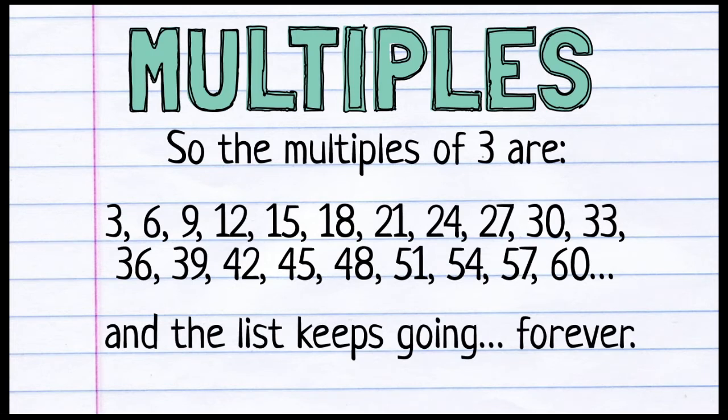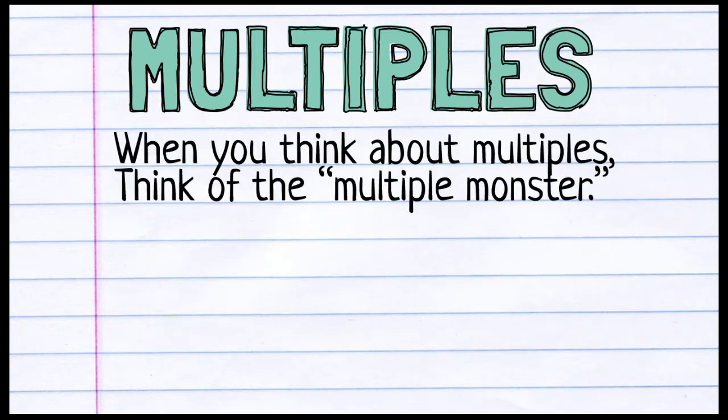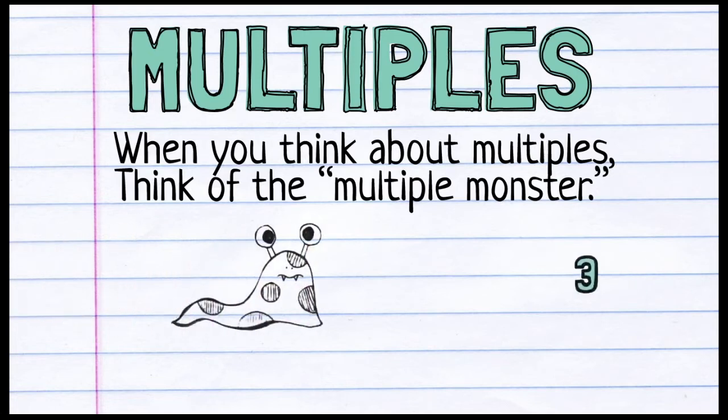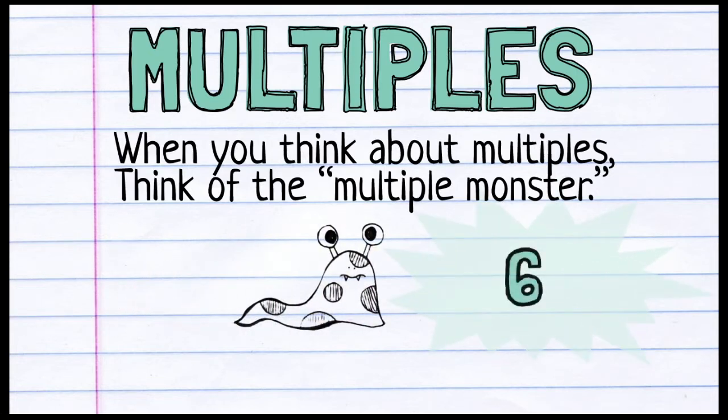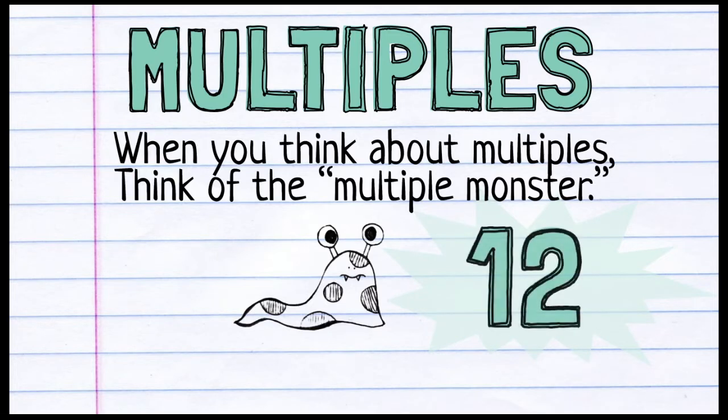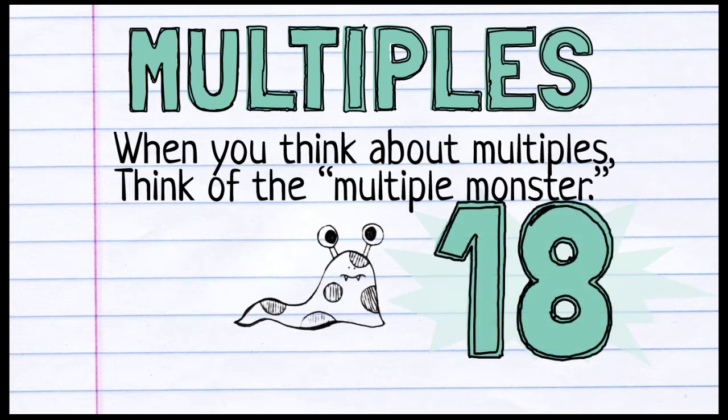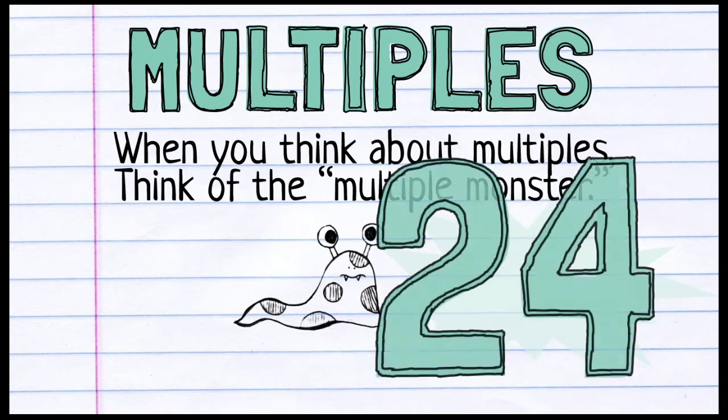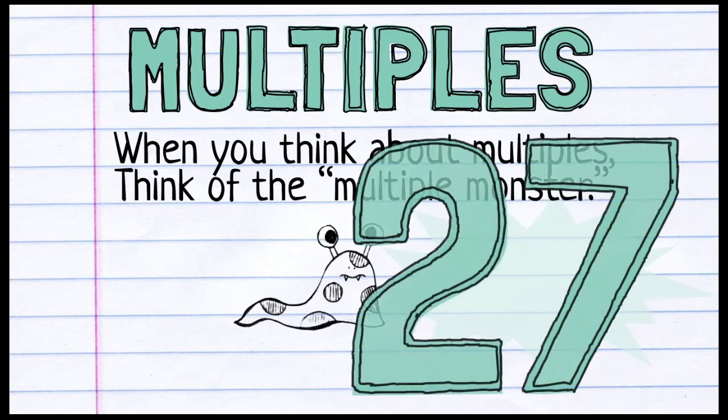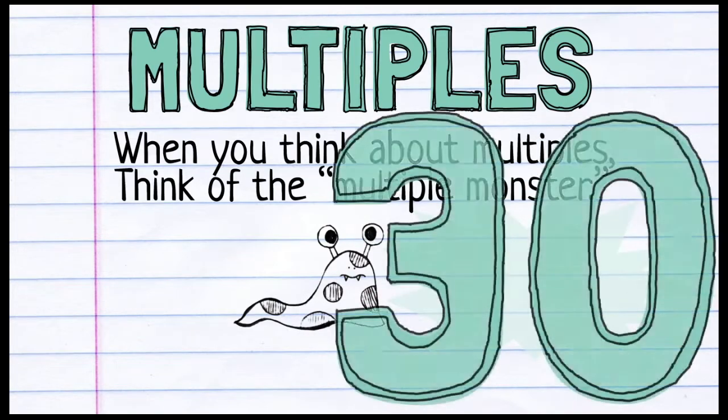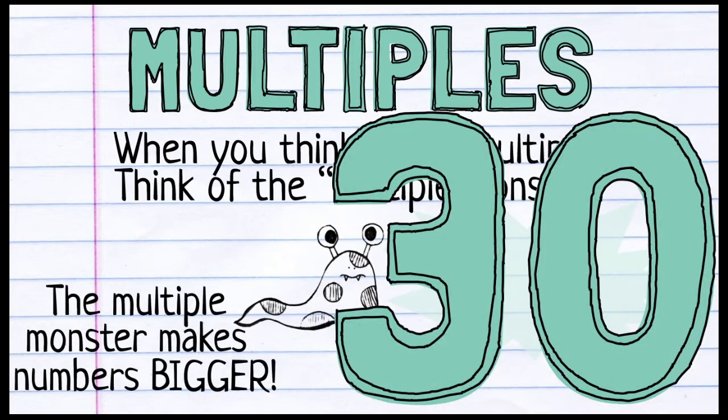Literally forever. You could list multiples of 3 until the end of time. There is an infinite number of multiples for each number. When you think about multiples, think of the multiple monster. So the multiple monster makes numbers bigger. Each time you list a multiple of 3, the number is getting bigger and bigger and bigger. And it's actually increasing by the number itself. Each time it's going up by 3. So the multiple monster makes numbers bigger.